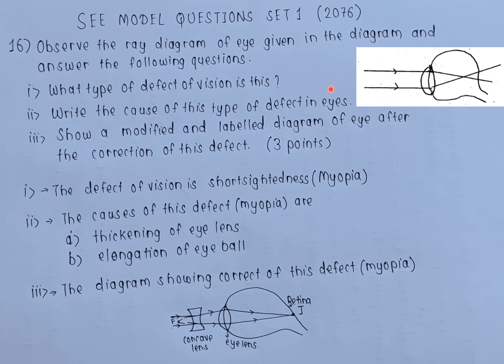Question 1: What type of defect of vision is this? Write the causes of this type of defect in eyes. Show a modified and labeled diagram of the eye after the correction of this defect. In total, the question carries three points.